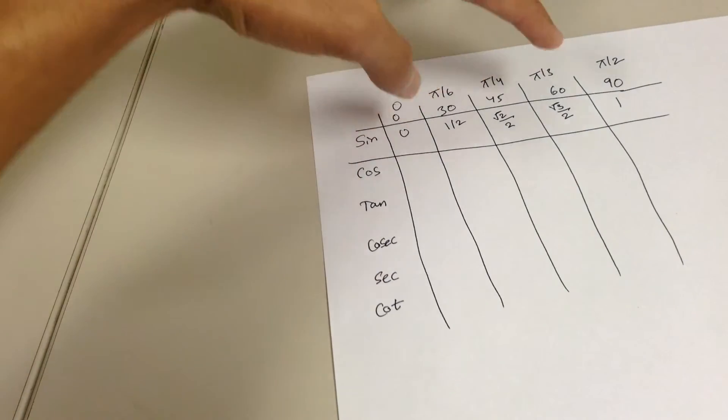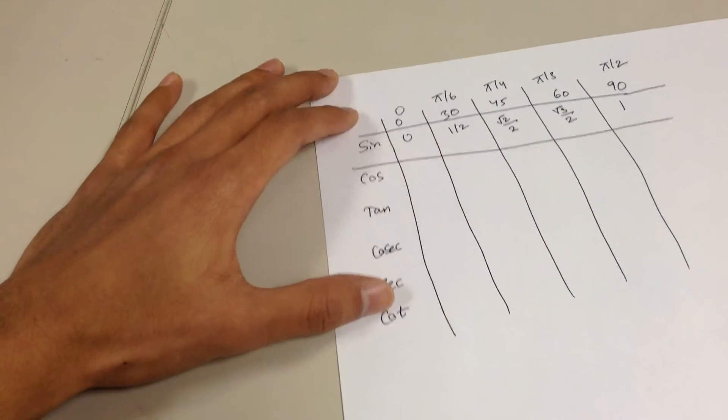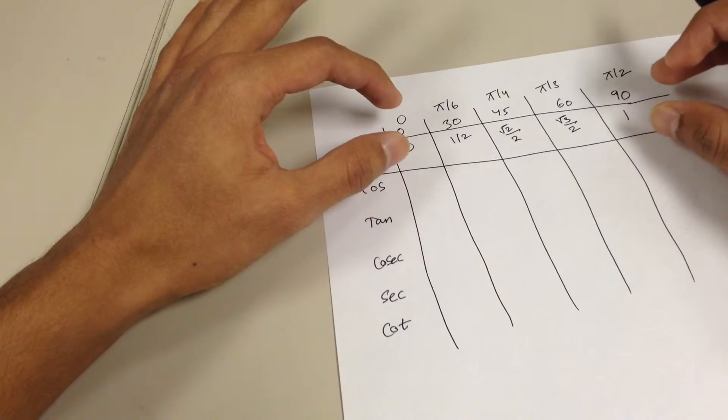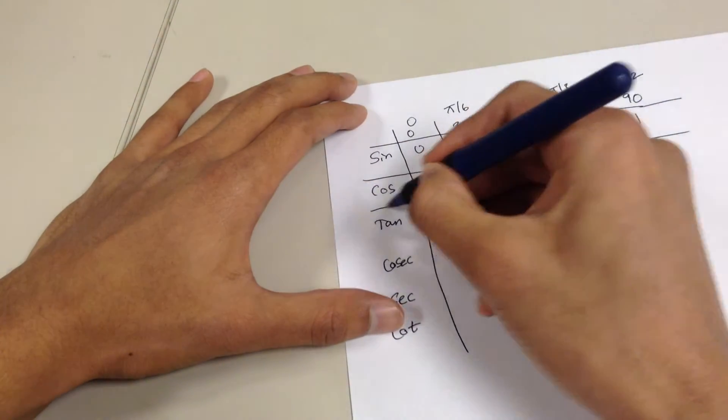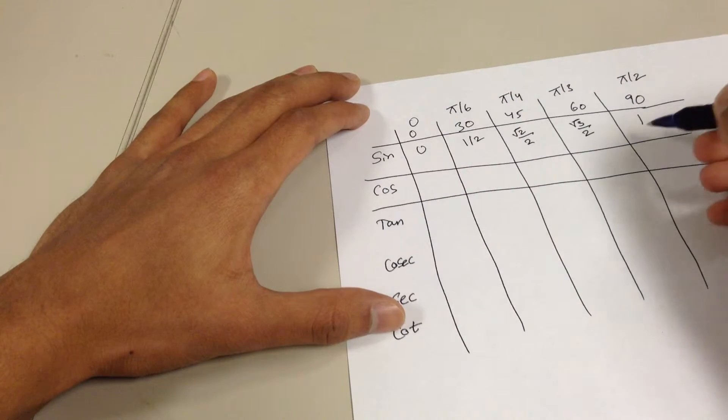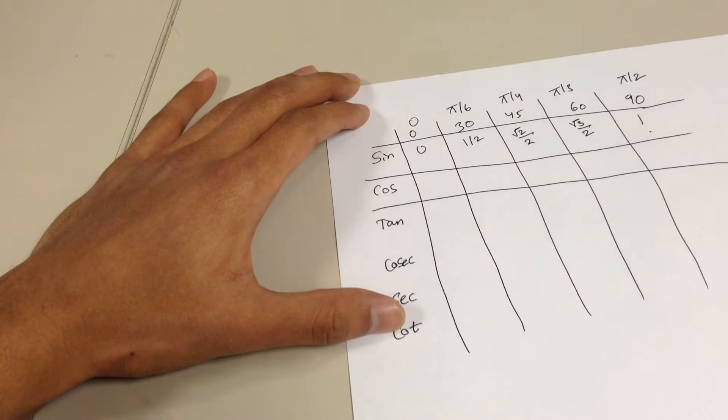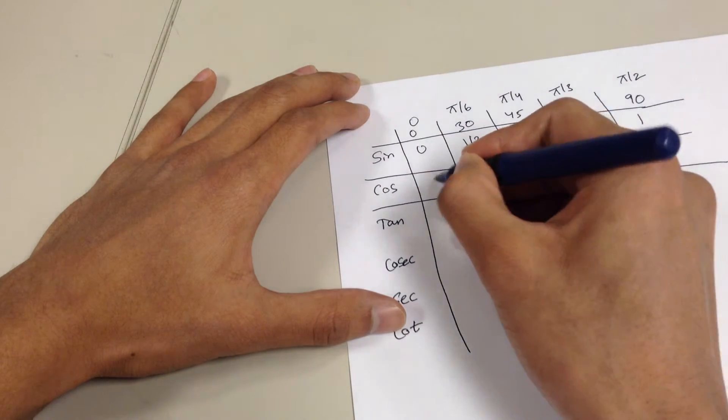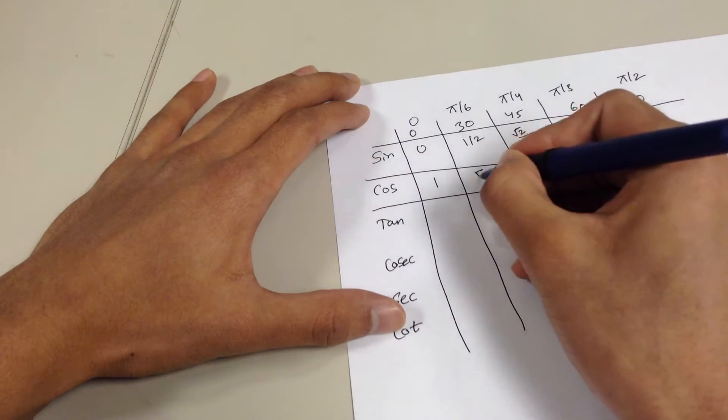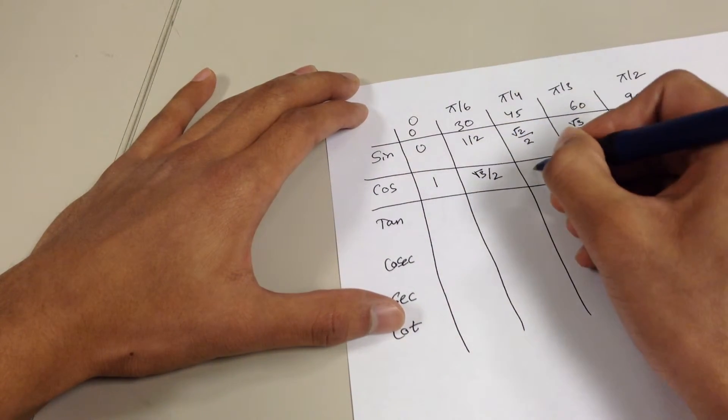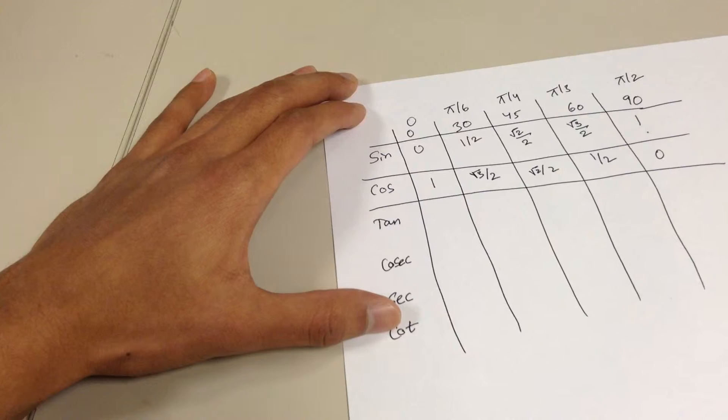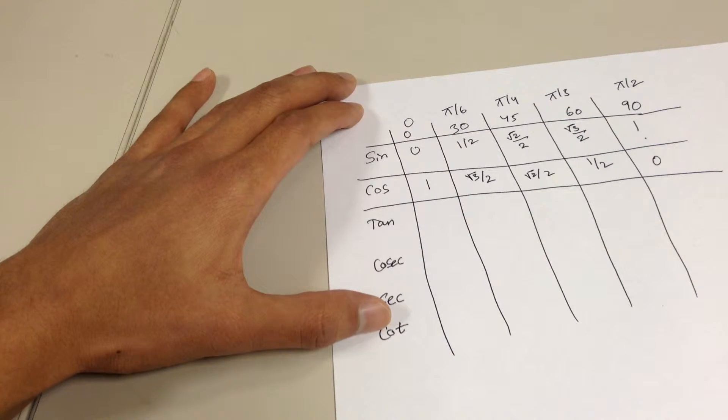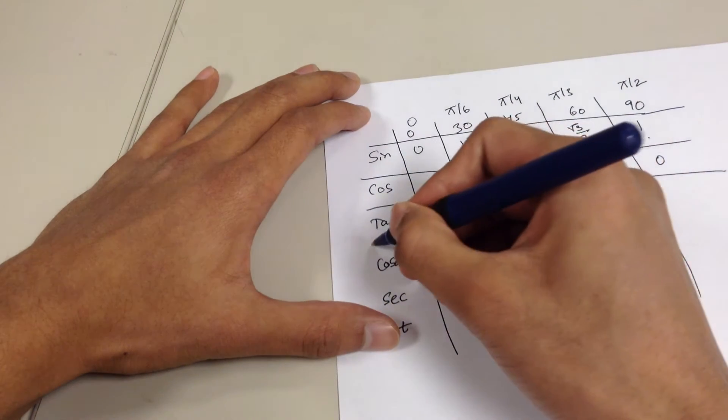How do you generate cosine values from these values? All you have to do is just take this one single row, flip it, and then paste it under cosine. So all you do is just start from here and then work your way backwards. So cosine of zero is going to be 1, 30 is going to be square root of three over two, 45 is going to be square root of two over two, 60 is going to be half, and then 90 is going to be zero. There you go. Now you have the cosine values for standard angles. Now let's move on to tangent.